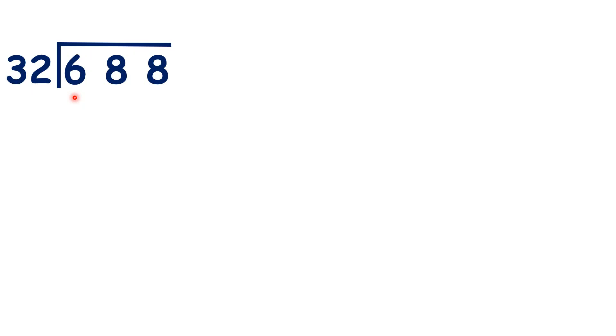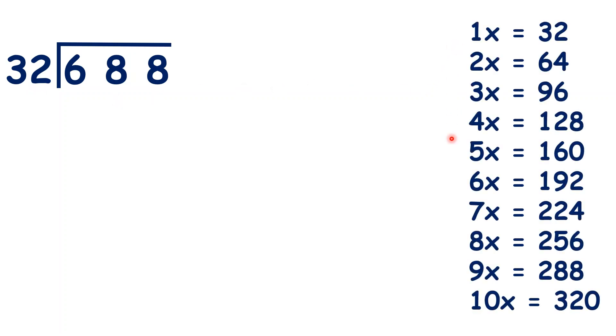We have 688 divided by 32, and to help us, let's write out our 32 times table. So if we start by taking the first two digits together, how can we work out 68 divided by 32?